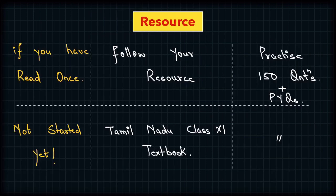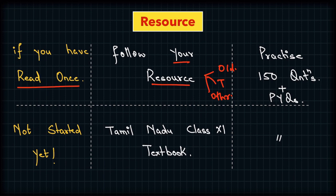For resources to follow for ancient and medieval history: if you have already studied this topic, whatever resource you followed — whether old NCERT or Tamil Nadu books — do not change the resources, just revise them. These are very good resources. If you haven't started at all, the Class 11 Tamil Nadu textbook covers everything in one book. In either case, make sure you cover 150 questions each in both ancient and medieval history.